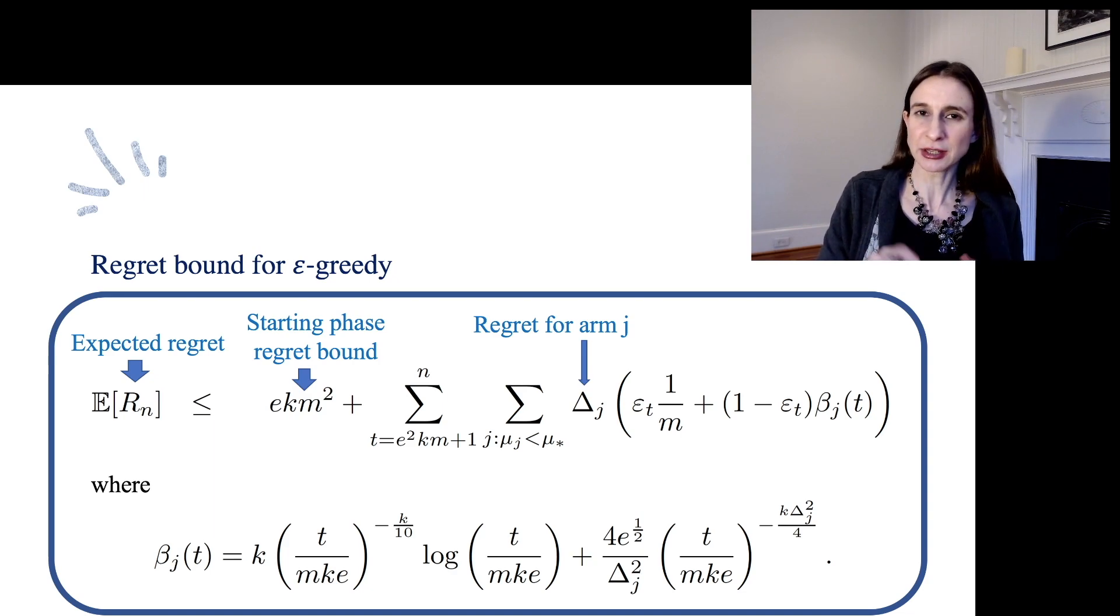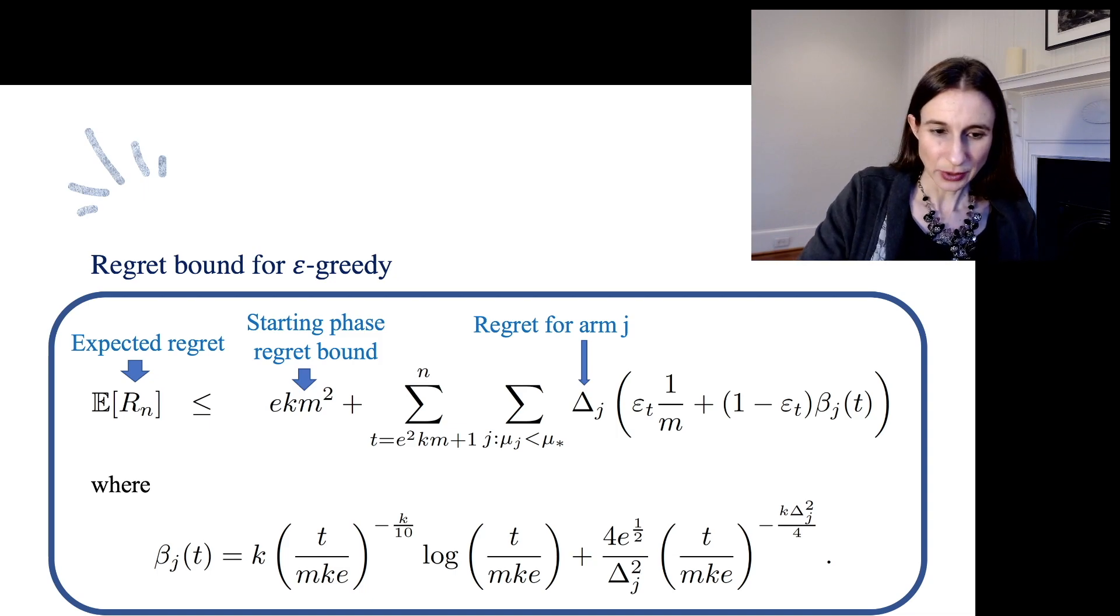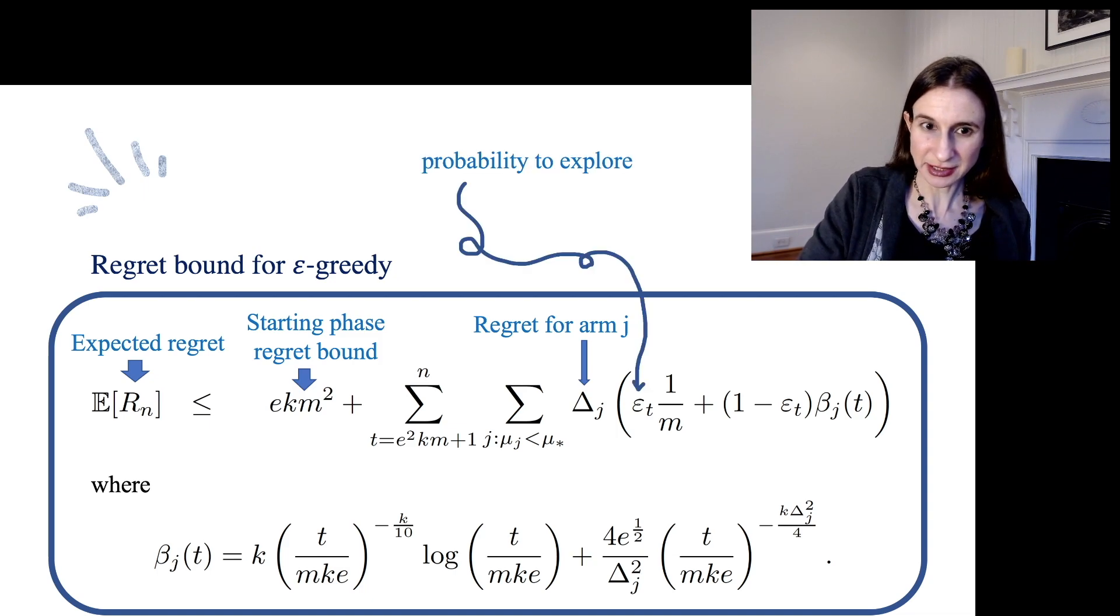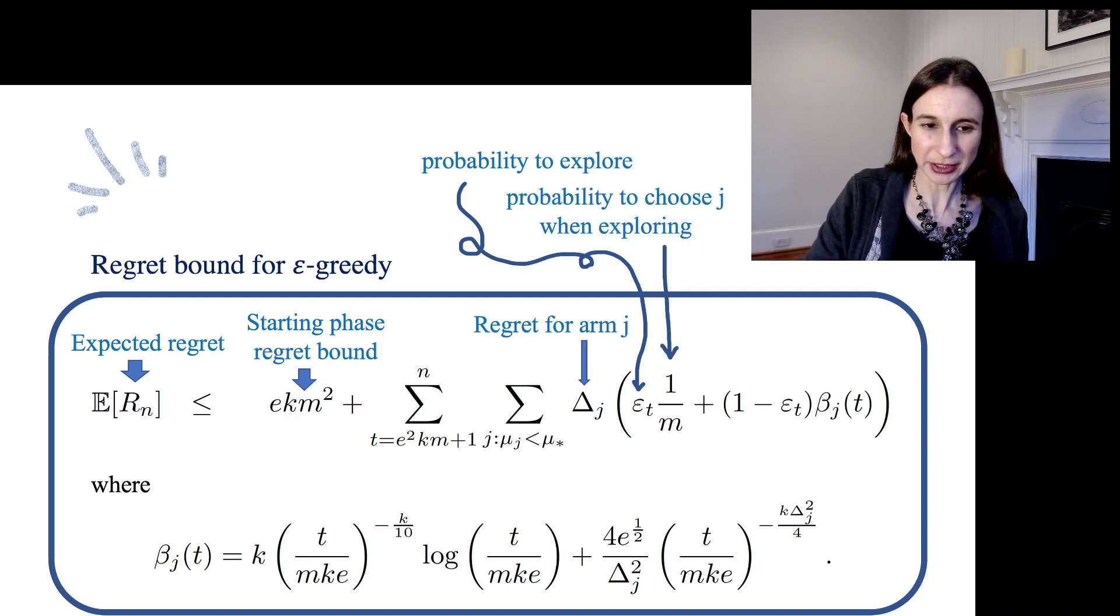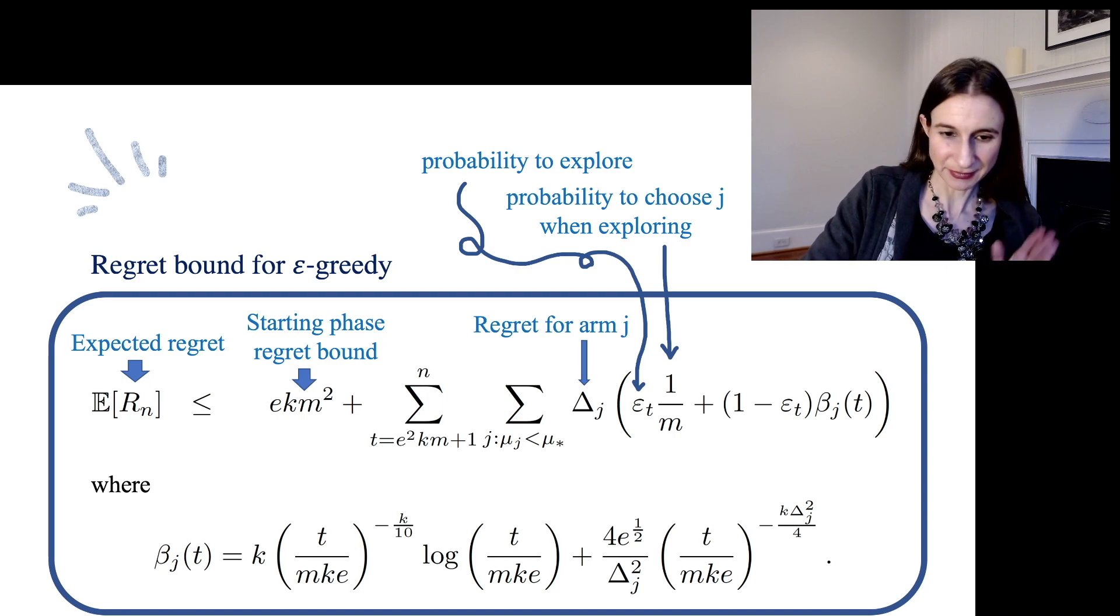We can choose arm j either by exploring or exploiting. If we choose arm j by exploring, we explore with probability ε_t, and then if we explore, we choose arm j with probability 1 over m, because there are m arms. So that takes care of the first term.